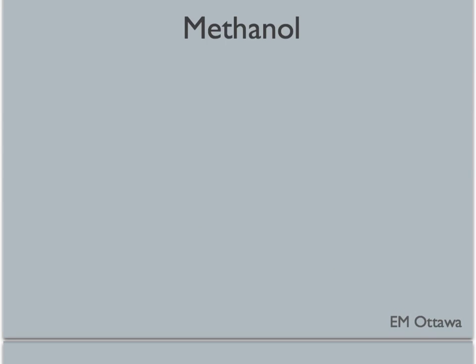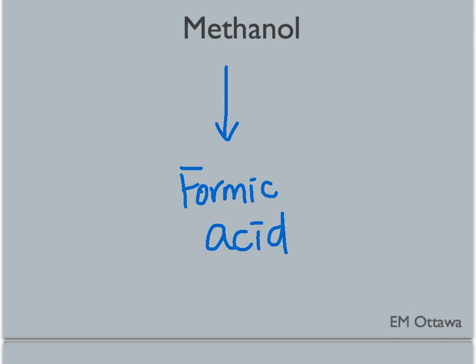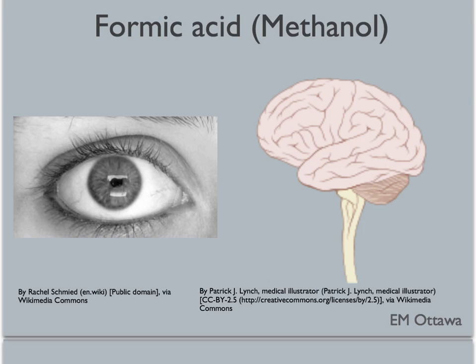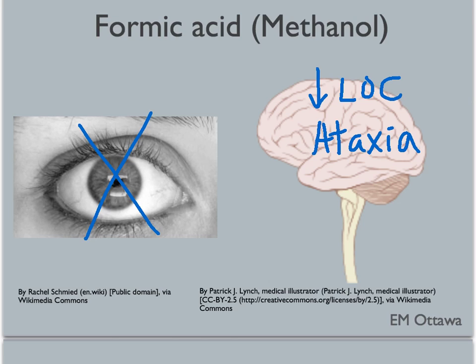Methanol is also known as wood alcohol and can be an unfortunate adulterant in homemade wines. Methanol itself is not toxic to the body; however, as we metabolize it, it is converted into formic acid — that is the toxic acid. Formic acid is toxic to the eyes and the brain. It causes blindness by attacking the optic nerve, and also causes altered mental status, ataxia, and seizures.